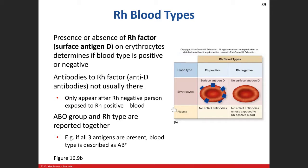Now we're adding the Rh factor — this is where the positive and negative comes into play. The Rh factor, also called antigen D, is another type of antigen. Anti-D antibodies are not usually present unless you've come in contact with Rh-positive blood. This is why it's commonly seen in pregnancy — if a mother is Rh negative and the baby is Rh positive, blood mixing can cause her to develop anti-D antibodies.